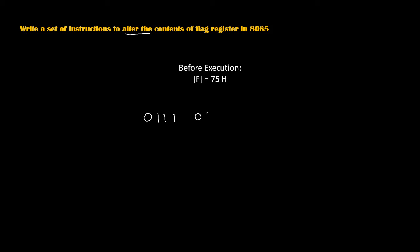Hello friends, today we are going to learn a program to alter the content of the flag register. Before execution, let's say the content of the flag register is 75H. This 75 can be written as 0111 (for 7) and 0101 (for 5).